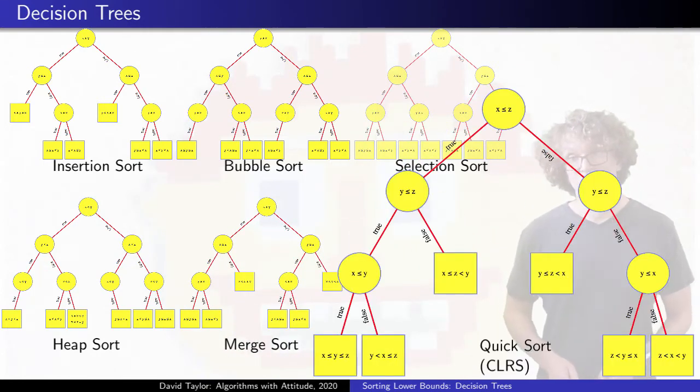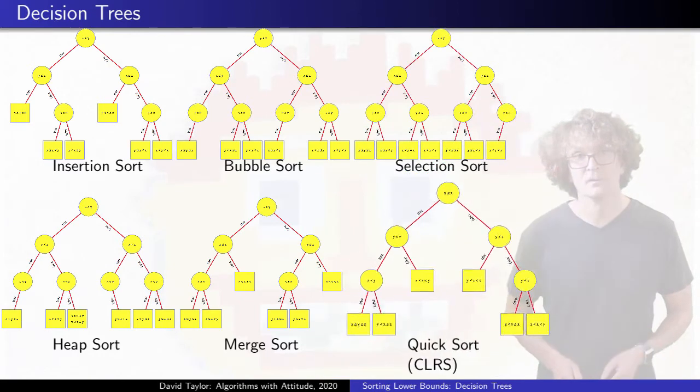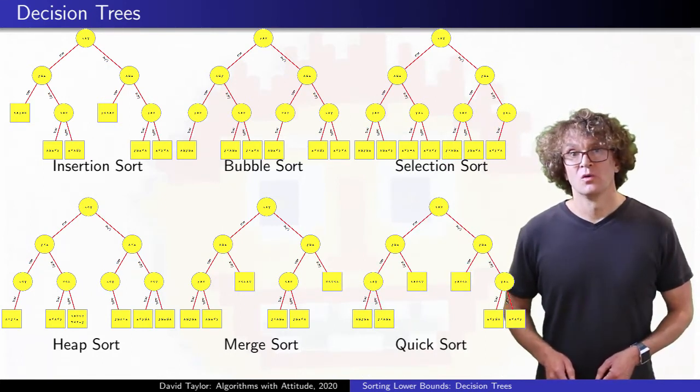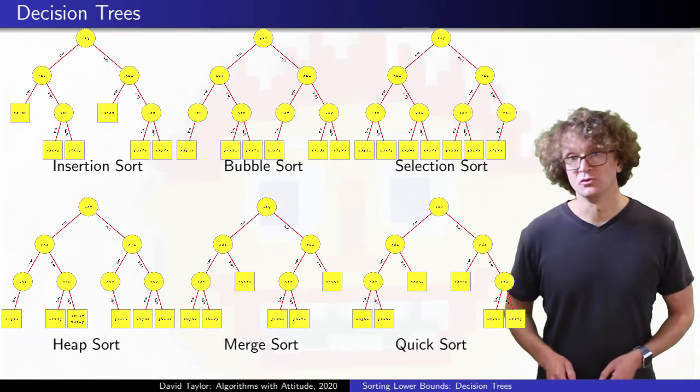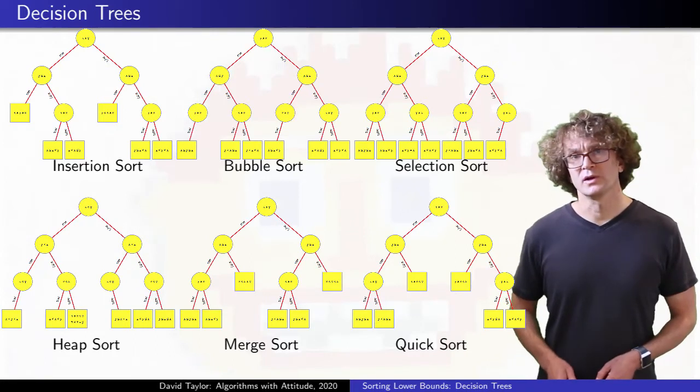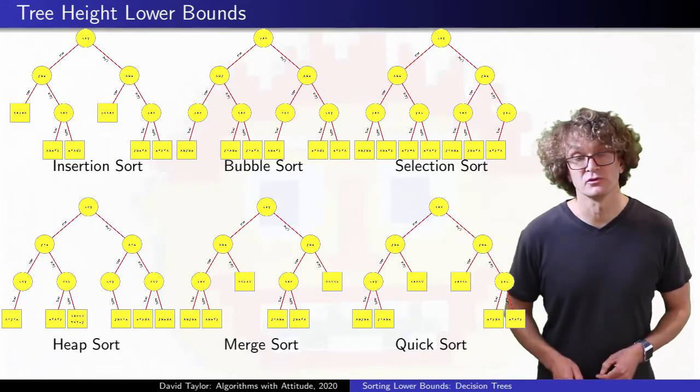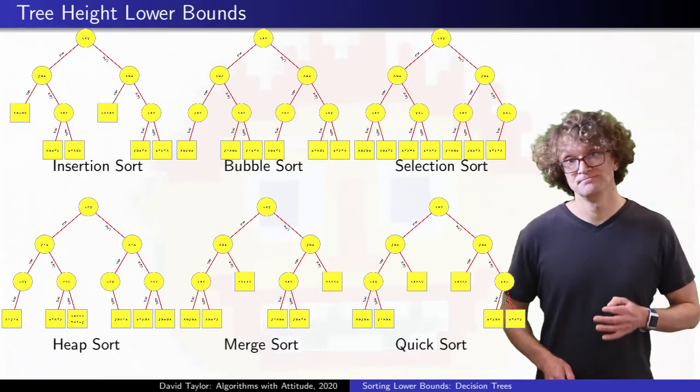Finally, the tree for quicksort, we can see its instability in this output. So some of these trees always take three comparisons, while others sometimes use two, and other times use three. The real question is, can we make a tree with at most two comparisons? Well, no.